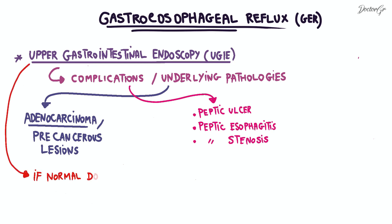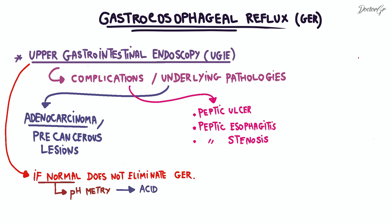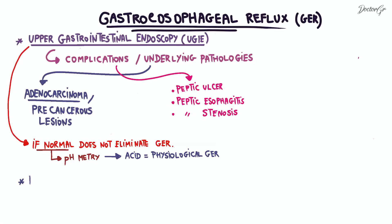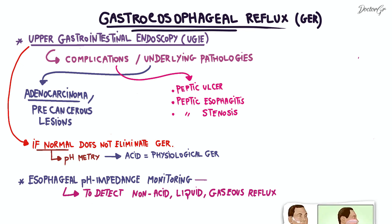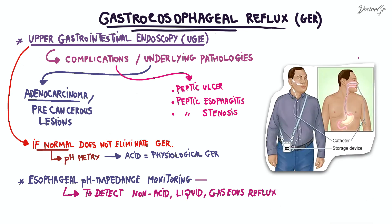It is worth noting that a normal endoscopy does not eliminate the diagnosis of gastroesophageal reflux. If it is normal, a pH-metry can be performed as a second intention to diagnose GER, particularly if it is of an acidic nature, since physiological GER can be entirely normal. Esophageal pH impedance monitoring is sometimes used to detect non-acidic liquid or gaseous reflux, and consists of a continuous measurement and recording of the pH at the lower part of the esophagus over a 24-hour period.